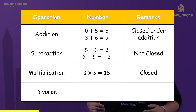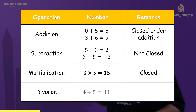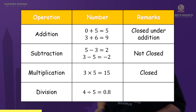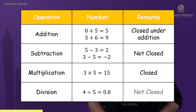Next, division: 4 divided by 5 — this is an example. The result is 0.8. 0.8 is not a whole number; it's a decimal, it's a fraction. So it is not closed under division.